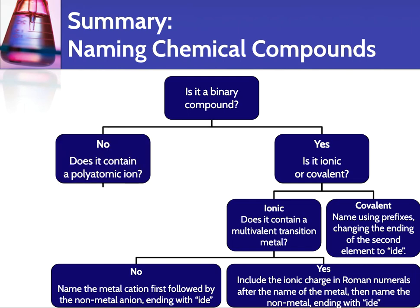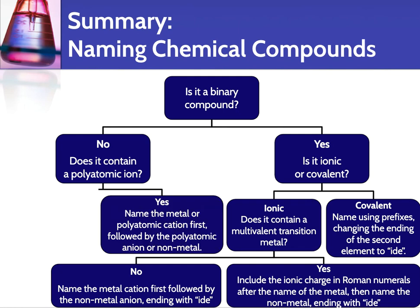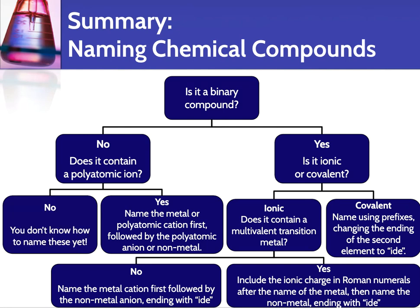Those are all the options if it's a binary compound. If it's not binary — if it has more than two elements — you look at it and determine if it has a polyatomic ion. If it does, you name the cation first (either a metal or a polyatomic cation), then the anion (either a polyatomic anion or a non-metal, changing the ending to -ide). We never change the endings of polyatomic ions. If it doesn't contain a polyatomic ion, then you just can't name it yet — that's a problem for future you!